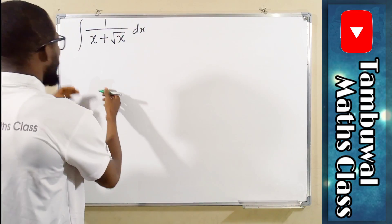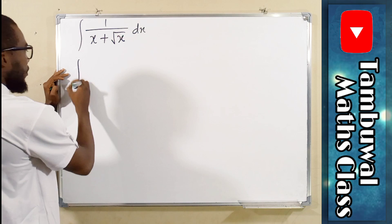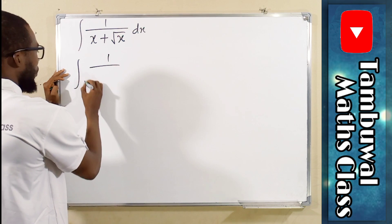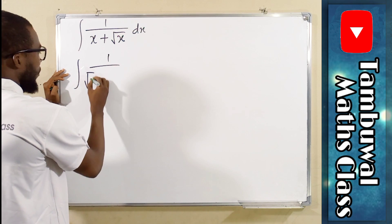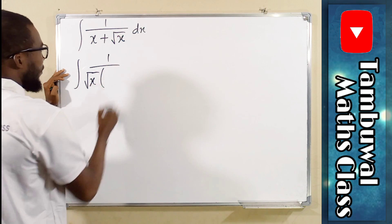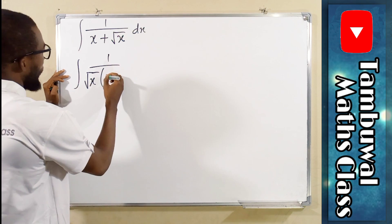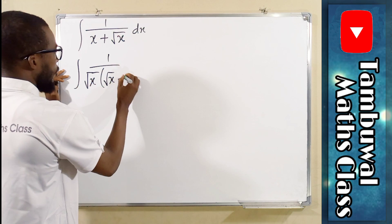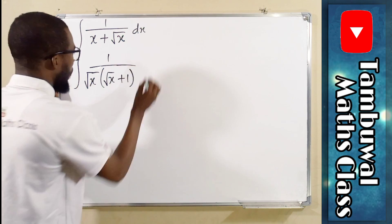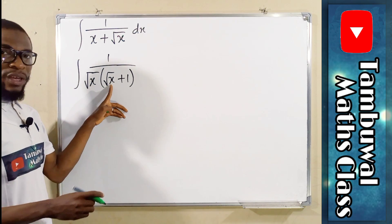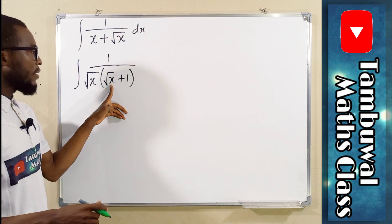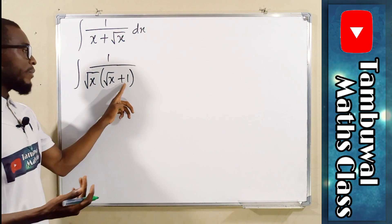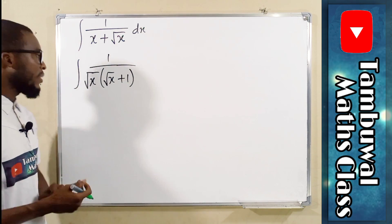It can be written as the integral of 1 divided by root x, in the bracket we have root x plus 1. Because root x times root x is root x squared, which is the same thing as x. Root x times 1 is the same thing as root x.